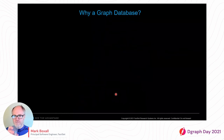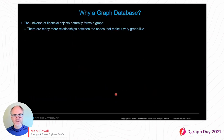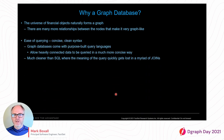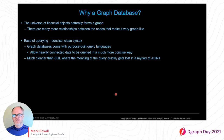So why did we want to use a graph database? Hopefully it's becoming clear based on the shape of the data that this universe of financial objects really does naturally form a graph structure — and in fact there are many more relationships between the nodes that make it even more graph-like. Also, ease of querying: graph databases come with purpose-built query languages that are really designed for querying heavily connected data in a very concise way. The queries are a lot more concise and a lot cleaner than something like SQL, where the meaning of what you're trying to achieve very quickly gets lost in all of the joins.